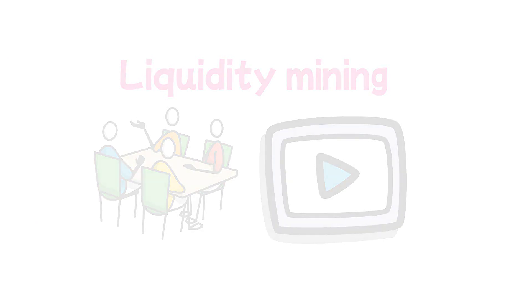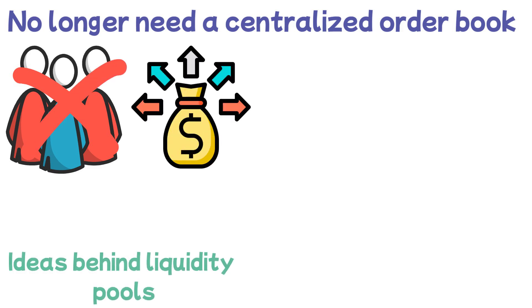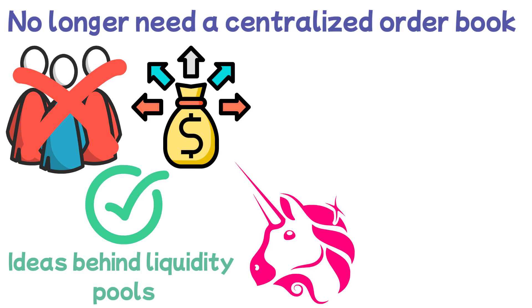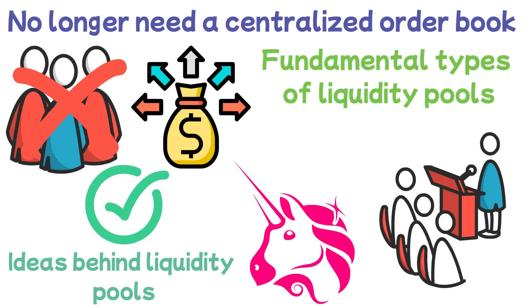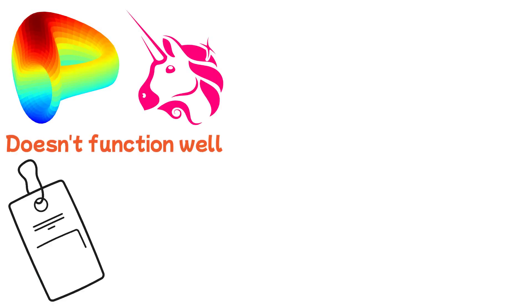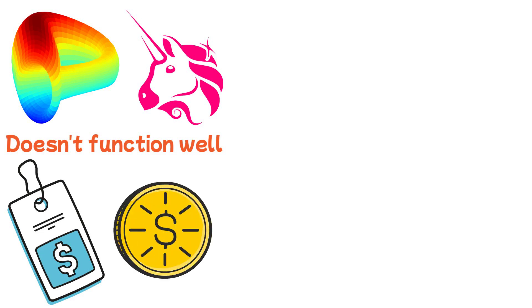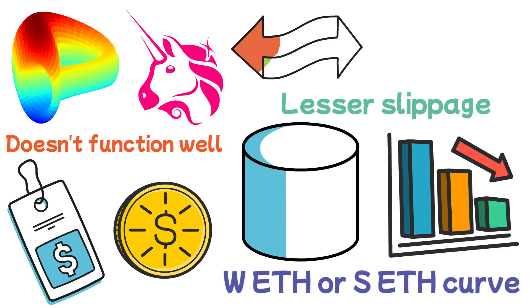Since we no longer need a centralized order book and can no longer rely on third parties to continuously supply liquidity to an exchange, the ideas behind liquidity pools and automated market creation are fairly straightforward but incredibly effective. Uniswap utilizes the most fundamental types of liquidity pools, which are the ones we just explained. Other initiatives iterated on this notion and produced a few creative concepts. For instance, Curve discovered that Uniswap's automated market-making method doesn't function well for assets with relatively comparable prices, such as stablecoins or distinct variants of the same token, like WETH or SETH. Curve pools are able to offer reduced costs and lesser slippage when trading these tokens because they use a slightly different algorithm.